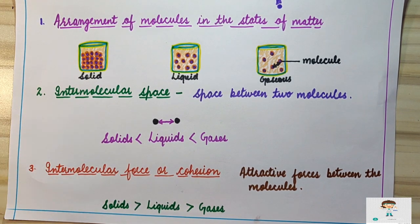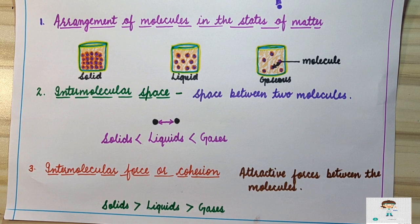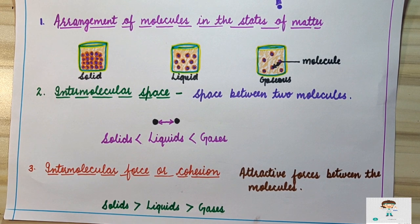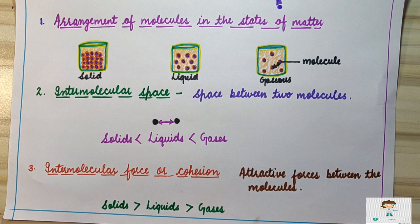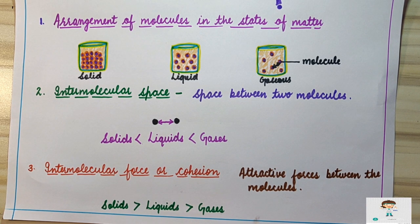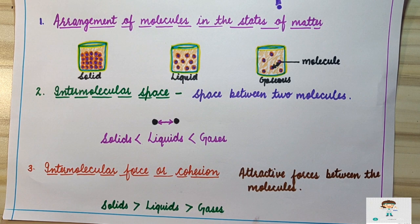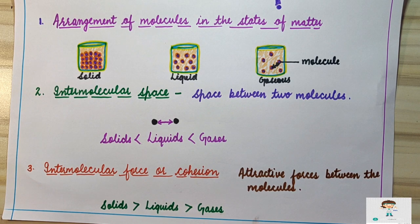So this is how we can define and differentiate a particular state of matter on the basis of three factors: one, arrangement of molecules; two, intermolecular space; and three, intermolecular force. I hope things are clear to you. If you have any doubts, please write in the comment section, and please like and subscribe the channel for more related videos. Thank you very much.